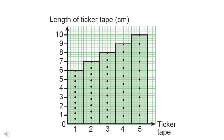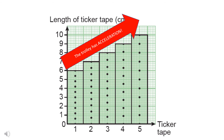Observe the ticker tape. Is the length of each strip the same? The strip becomes longer as the time increases. The inference we can make is that the velocity increases — hence, the trolley has acceleration.